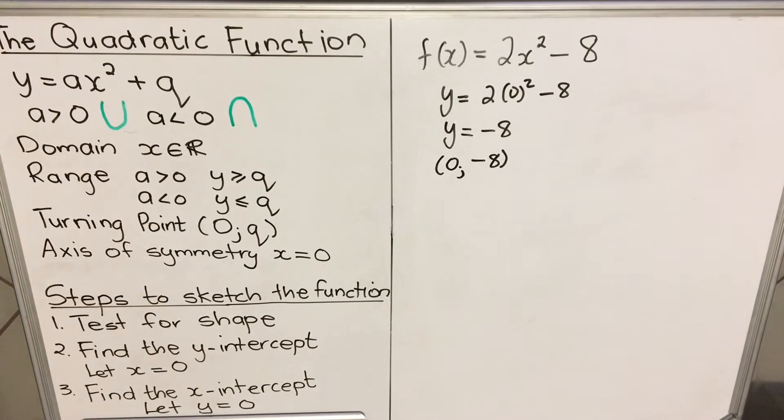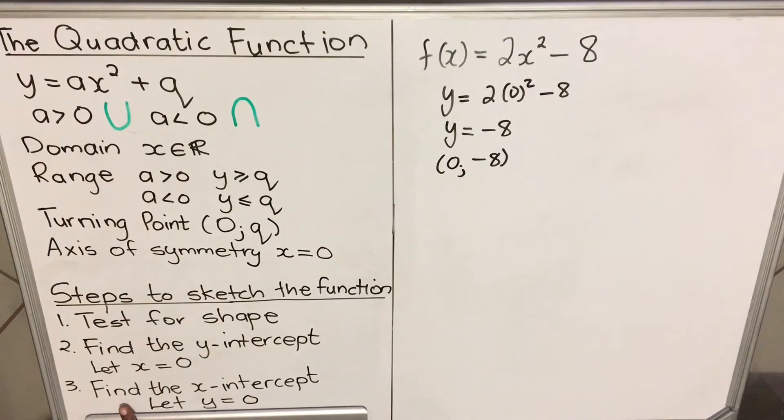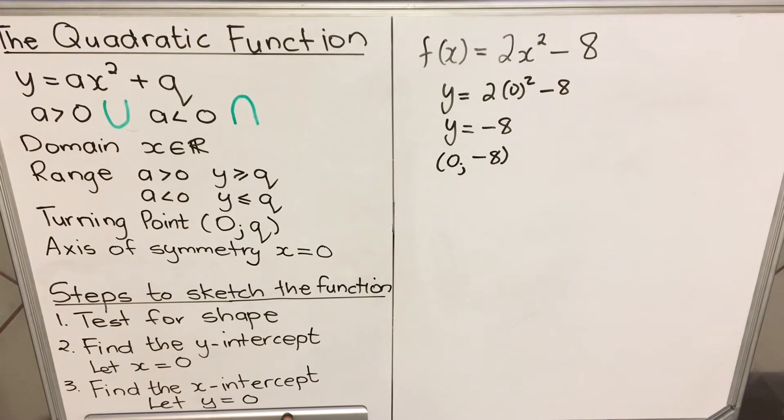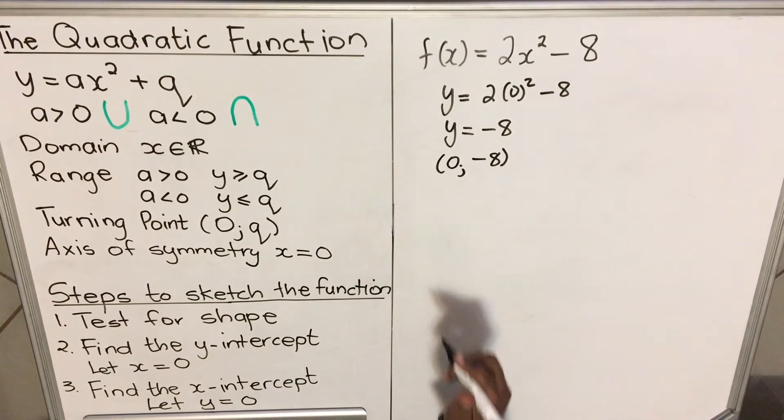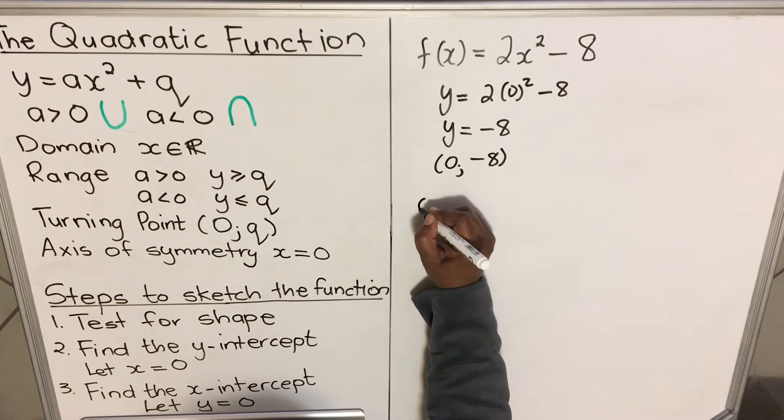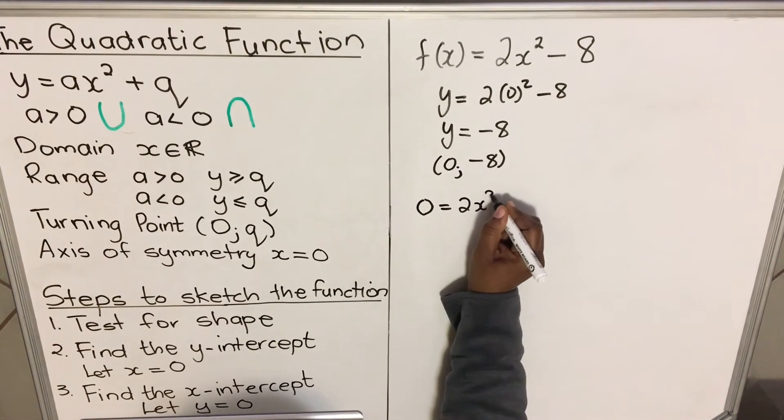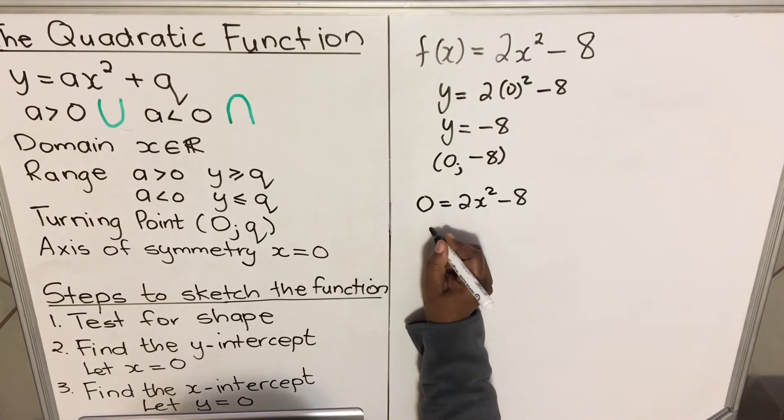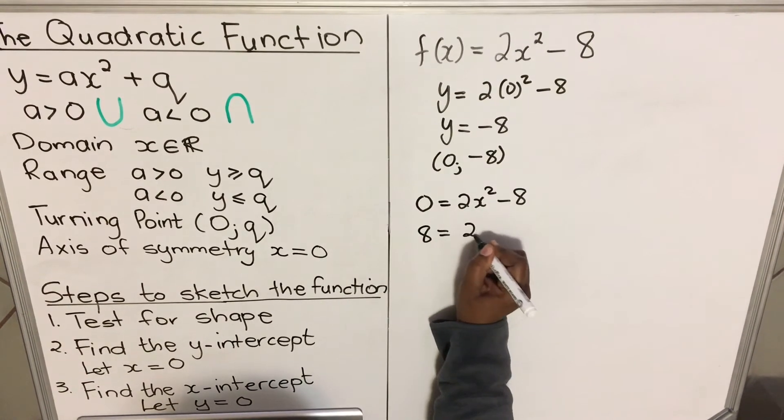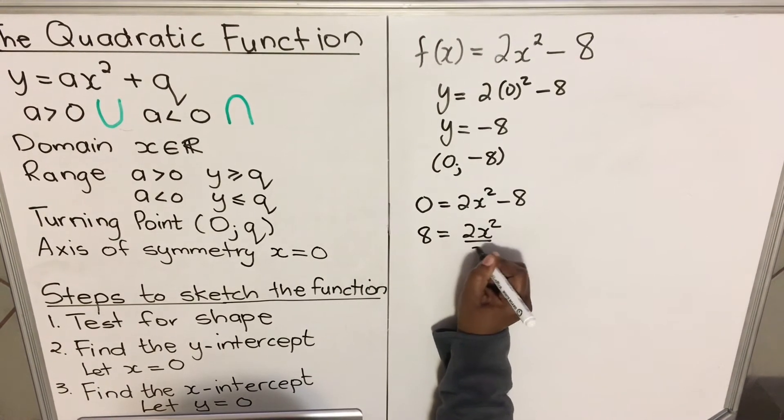Then let's do the third one: you find the x-intercept. We let y be zero. So we have 0 equals 2x squared minus 8. We take the 8 to the other side: 2x squared. Divide by 2 both sides.